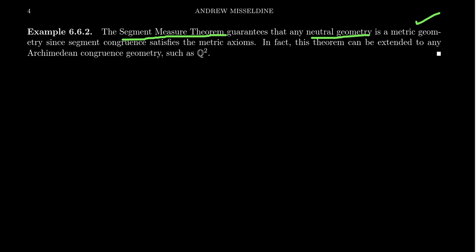There are of course non-neutral geometries like the rational plane Q2, for which we can give a distance to length. So that's not, that doesn't have to be neutral, but the segment measure theorem gives us that every neutral geometry will be a metric geometry. But like I said, Q2 can be done. Basically any Archimedean congruence geometry can be made into a metric geometry. There's ways of defining a measure to a distance, a length to each segment. So that's basically what we're doing right here. Congruence geometry, basically we had metric geometry inside of it, but I do want to point out to you that there do exist metric spaces that are very different from the type of geometries we're talking about right now.